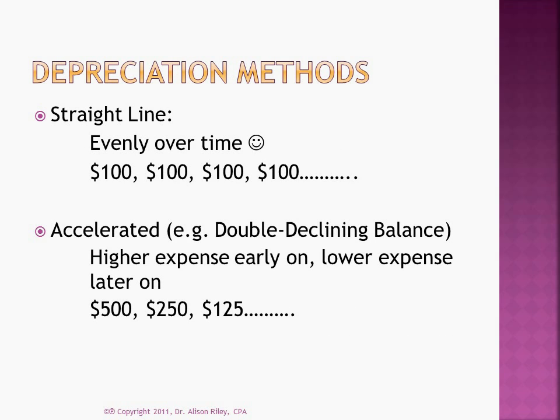Let's look again at depreciation. So far we have considered only one depreciation method, the straight line method. This method depreciates capital assets evenly over time, which means that the same amount of expense will be recognised each full year — $100 in this example. A set of alternative methods exists called accelerated methods, one example of which is the double declining balance method. These accelerated methods result in higher expense in the early years of the asset's useful life and lower expense in the later years. A method of this type is appropriate for assets that are more productive revenue-wise in their early years than in their later years.